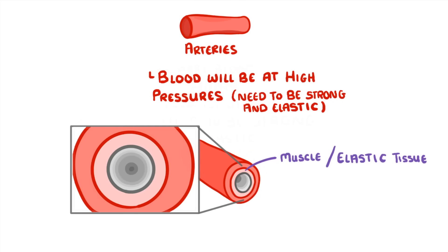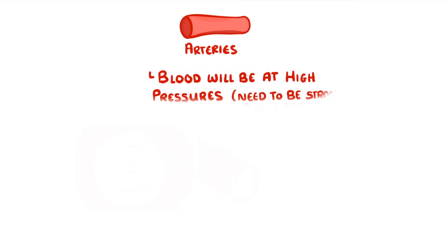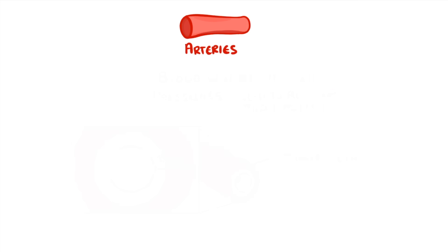These two layers mean that the wall of the artery is quite thick when compared to its lumen, which is what we call the hole or space in the middle of the vessel. Once the arteries have transported the blood to the different parts of the body, it enters the capillaries.